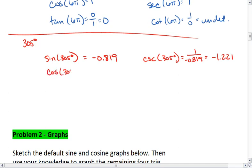Cosine of 305, we just plug this into our calculator, we get 0.574. The reciprocal of that, which gives us our secant value, is 1.743.